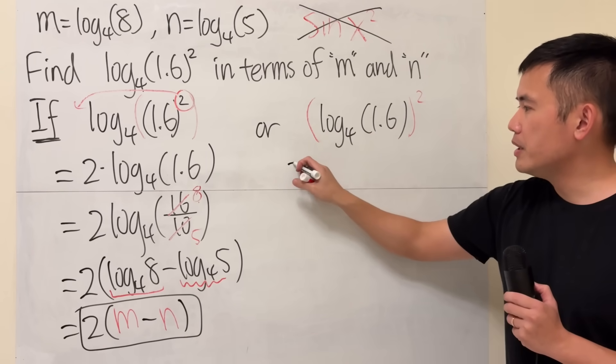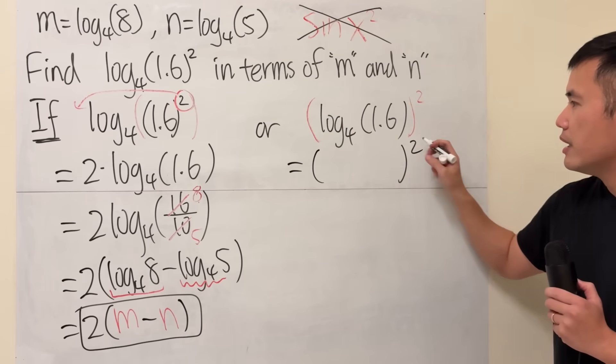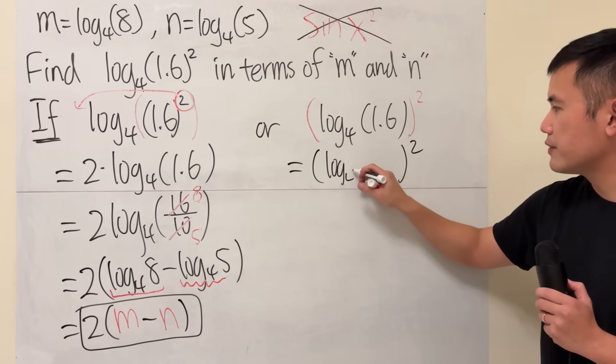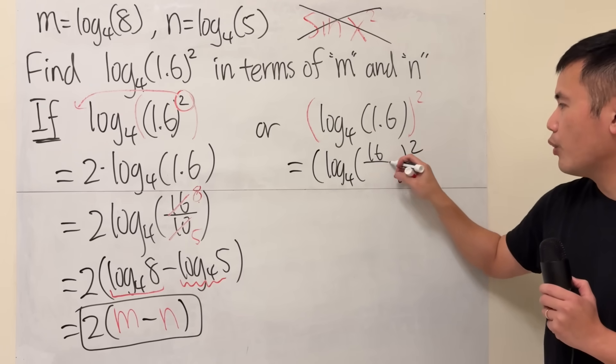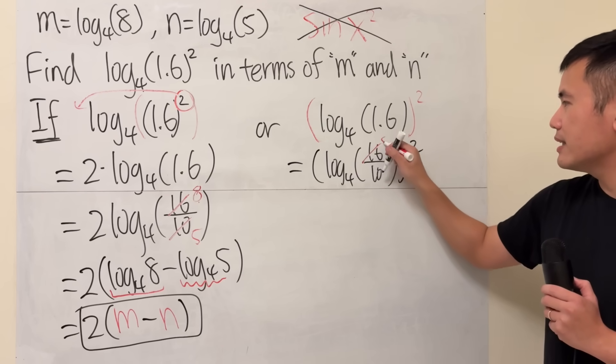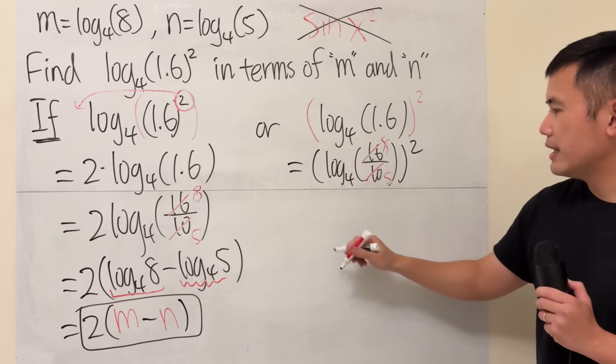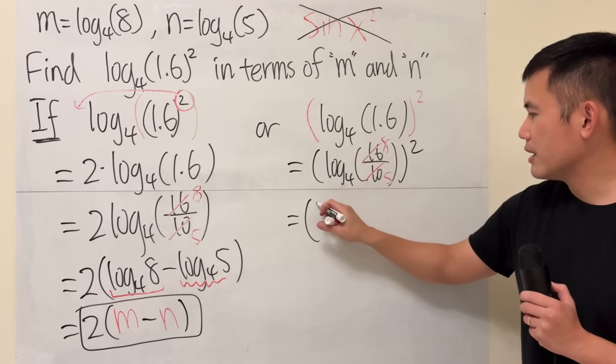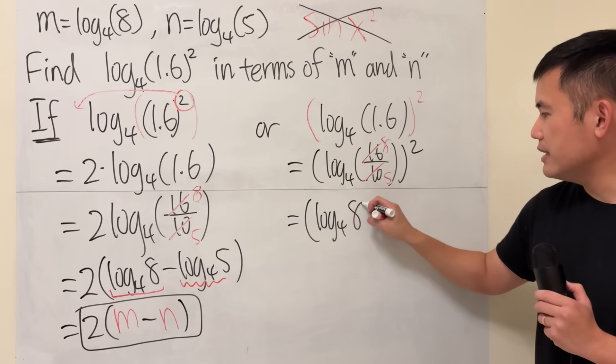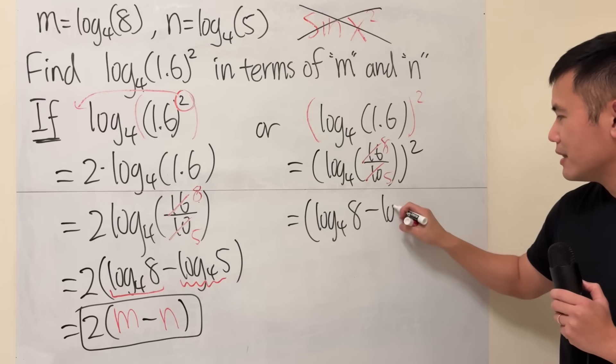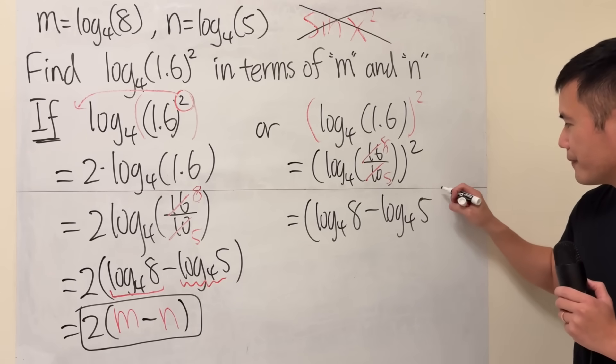You have just worked out inside by itself. So this would be the parentheses still on the outside, and then write this as log base 4 of 16 over 10. Reduce that, 8 over 5. And then rewrite it: this is log base 4 of 8 minus log base 4 of 5, and then square.